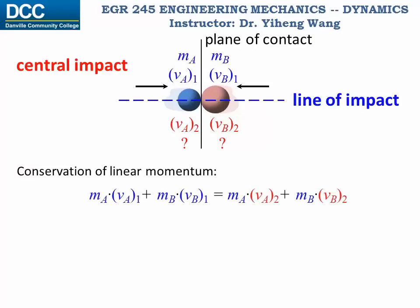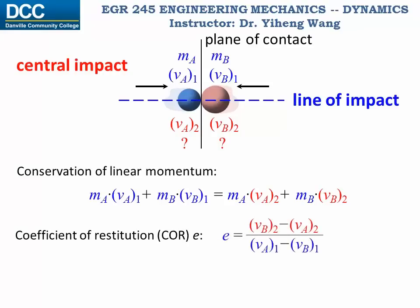As you can see, we have one equation but two unknowns, the final velocities of the two particles. Therefore, we cannot solve for both unknowns unless we have another equation. Where should we find the other equation? Let me remind you, you shouldn't readily assume that the energy of the system is also conserved. If we do know the coefficient of restitution E between the two colliding materials, then we will have one more equation, and we will have two equations and we can solve for the two unknowns.